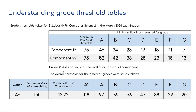To get the A-star, the levels are adjusted and it's generally around about 20 marks difference — it's quite a high jump between the A and the A-star. But as you can see, it doesn't really matter where you've got the marks from, as long as you've got 118 marks in a combination of paper one and paper two.